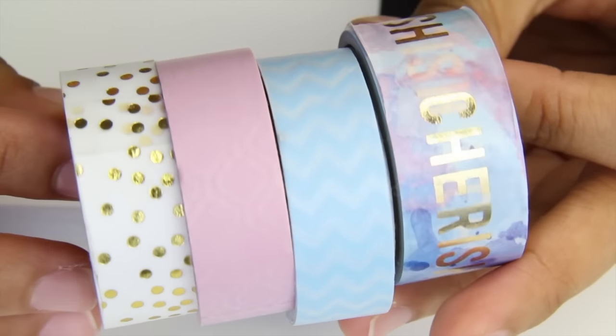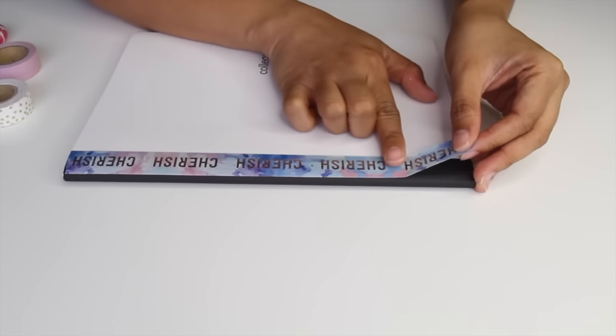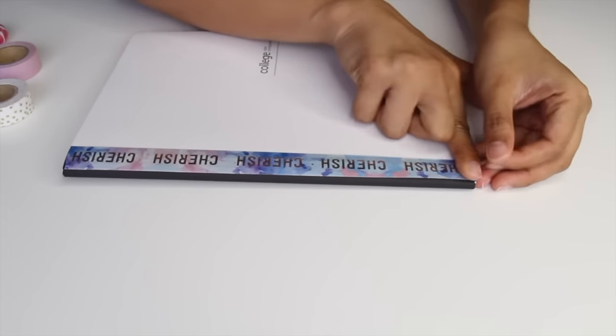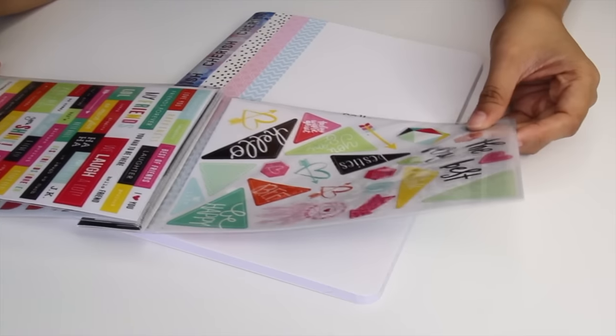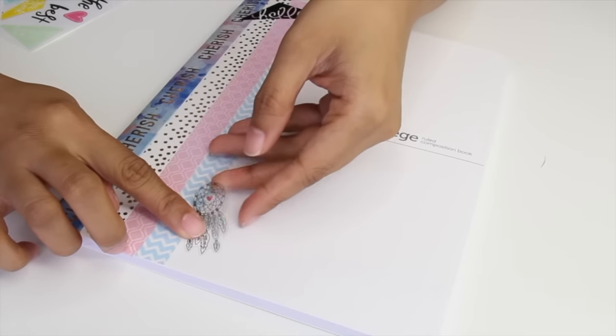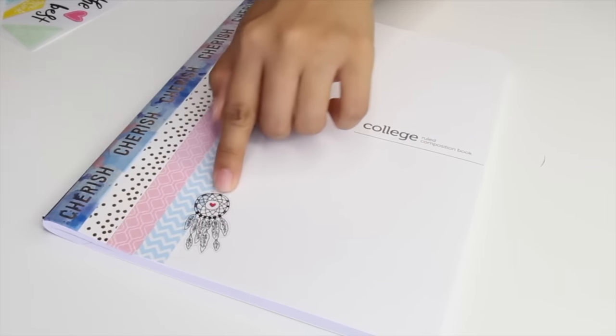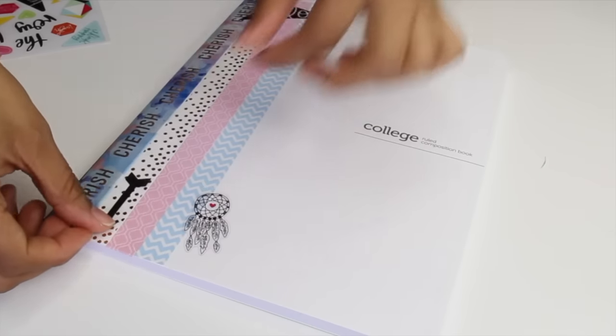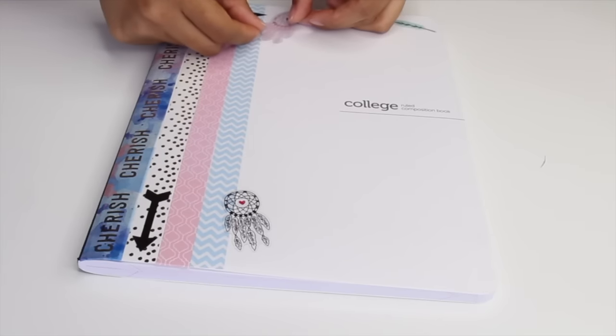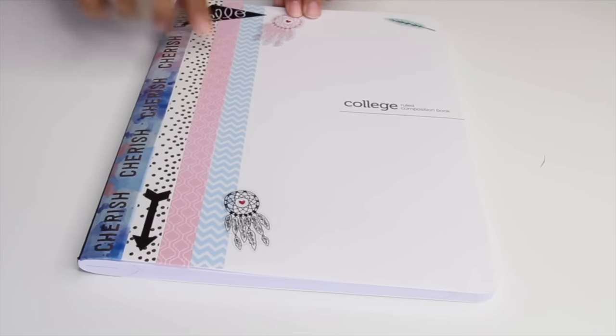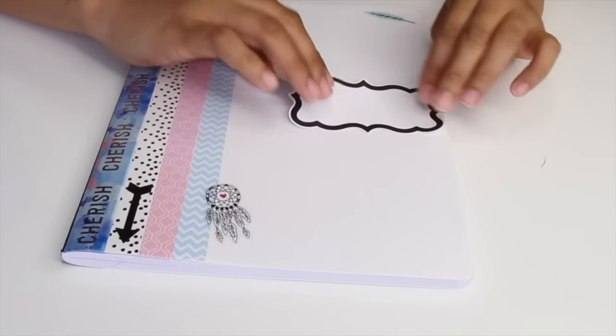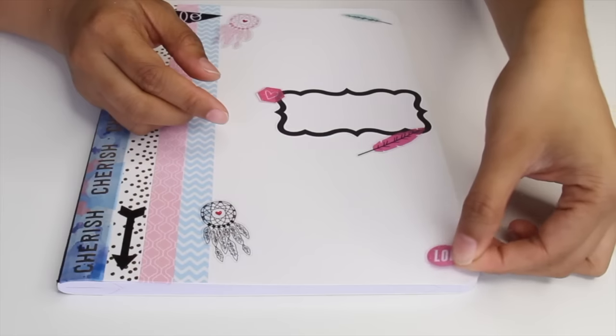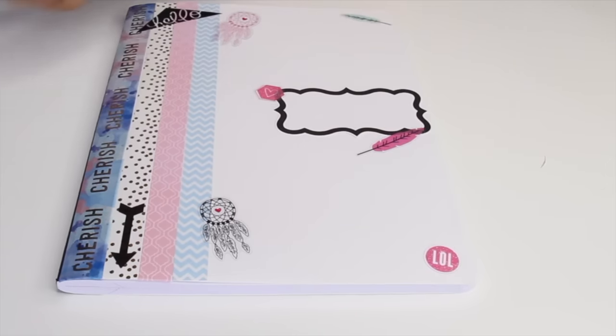Choose three to four coordinating washi tapes and start covering your notebook. I'm starting here at the spine of the notebook and just making some vertical lines with my washi tape. You can do different patterns as well and then add some stickers that add your style. Here I'm just going for like a feather theme - I have some dream catchers and some arrows. And then for the sticker label I'm going to cover the front of the notebook and this is where I'm going to write down the subject.